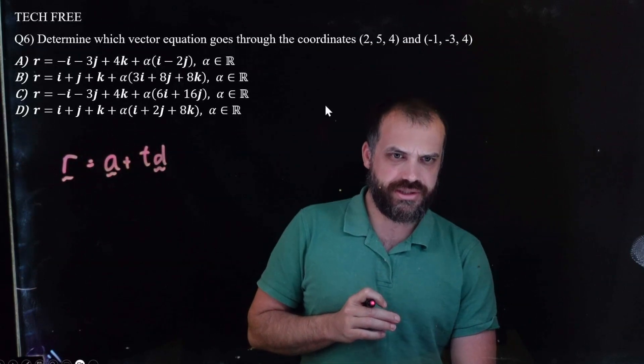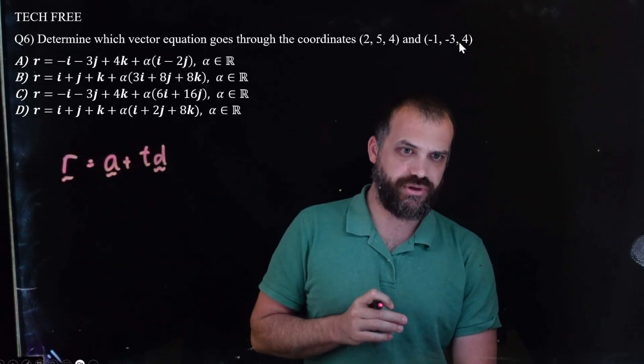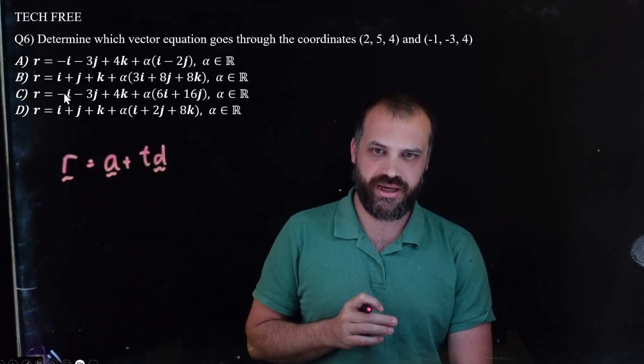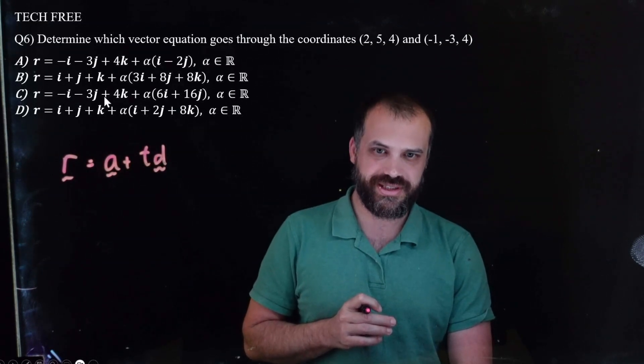You should have the vector equation of a line in your head as being A plus T, D, where A is some starting point, right? Now, when I look at these two points here, I see a negative 1, negative 3, 4. I see a negative 1, negative 3, 4 in option A. And I see a negative 1, negative 3, 4 in option C.